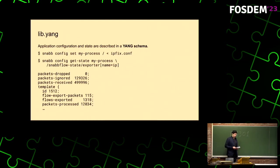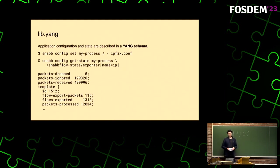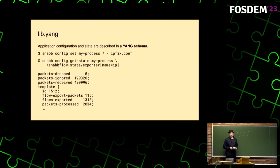We also have libyang. Both the configuration and the application state of SnapFlow are described in a YANG schema. For example, you can tell the control plane to load a new configuration of SnapFlow, or you can query it for state counters while it's running. On this slide I have examples of how you use the SNAP command-line interface to do those things.